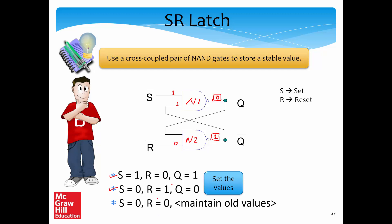Now let's take a look at the remaining two combinations. Let's assume S=0 and R=0. Since S=0, S complement is 1, and since R=0, R complement is 1. As a result, we will not be sure about the output of the NAND gate from the inputs alone — it depends on what we have. The first NAND gate has input Q bar, and the second has input Q.